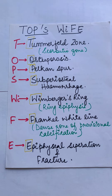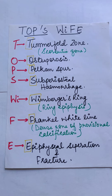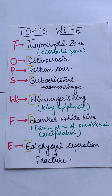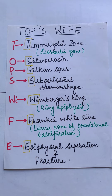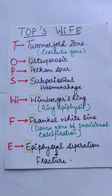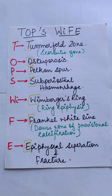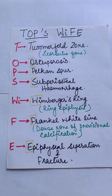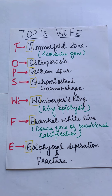WI stands for Wimberger Ring, also known as Ring Epiphysis. F stands for Frenkel White Line, which is a dense zone of provisional calcification. E stands for Epiphyseal Separation and Fracture. These are also the radiological and X-ray features of Scurvy.